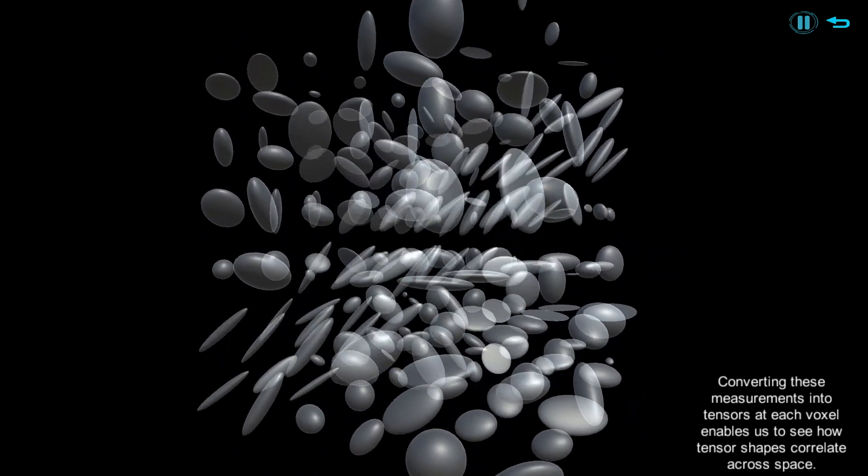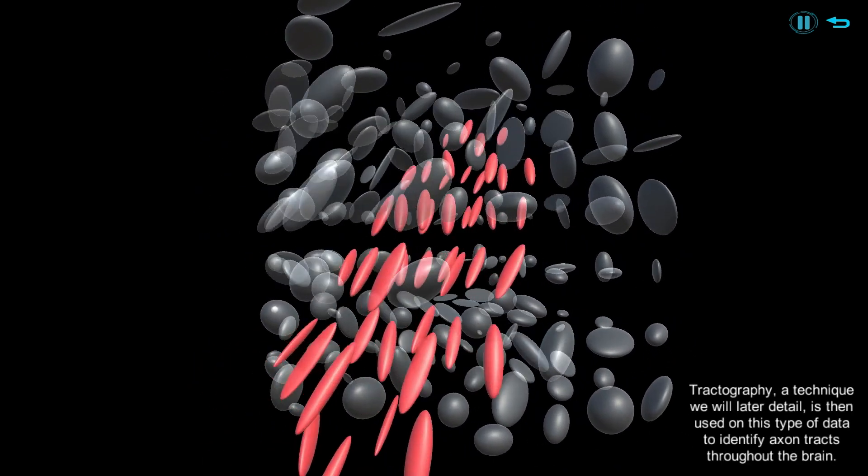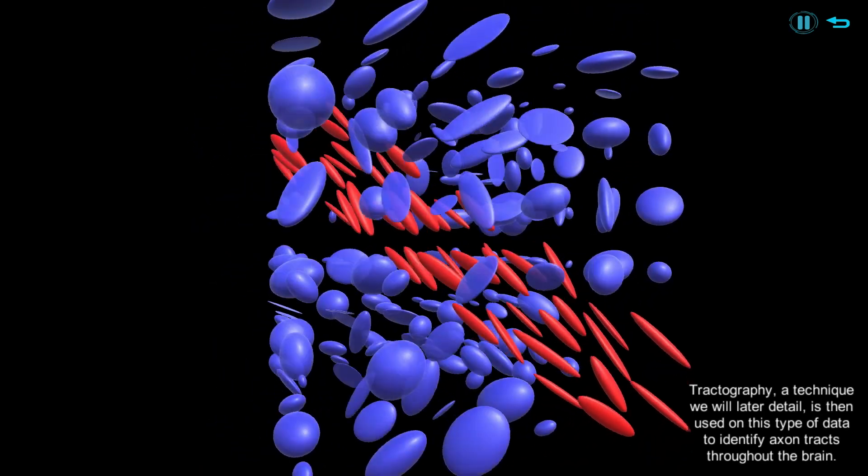Tractography, a technique we will later detail, is then used on this type of data to identify axon tracks throughout the brain.